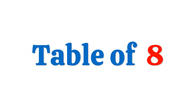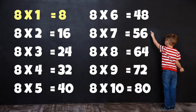Table of 8: 8 times 1 is 8, 8 times 2 is 16, 8 times 3 is 24, 8 times 4 is 32, 8 times 5 is 40, 8 times 6 is 48, 8 times 7 is 56, 8 times 8 is 64, 8 times 9 is 72, 8 times 10 is 80.